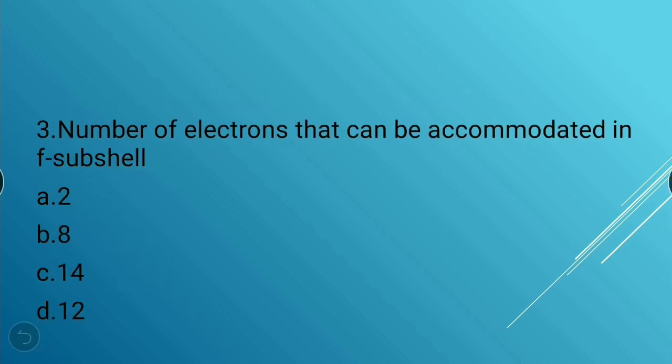Next question: What is the number of electrons that can be accommodated in the f sub-shell? Options: 2, 8, 14, or 12. The answer is 14 — option C.